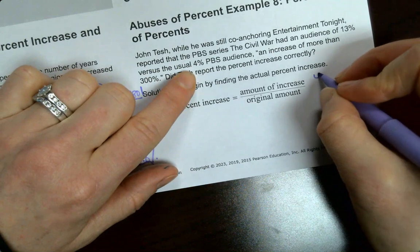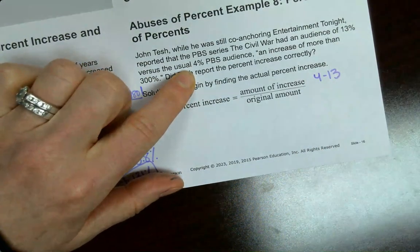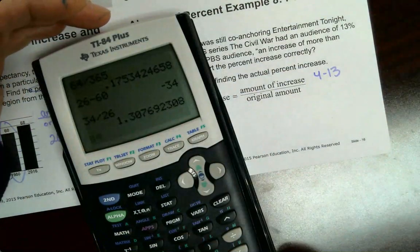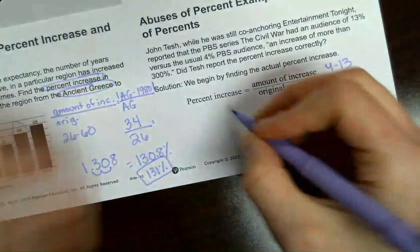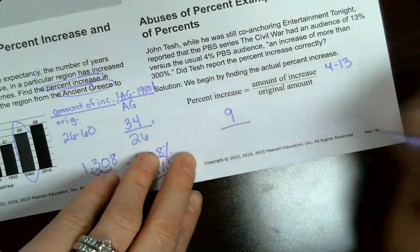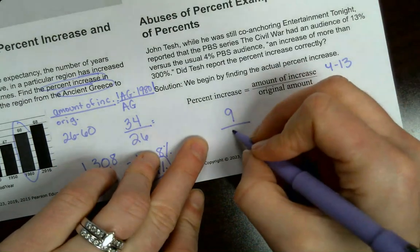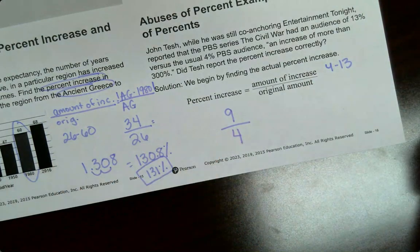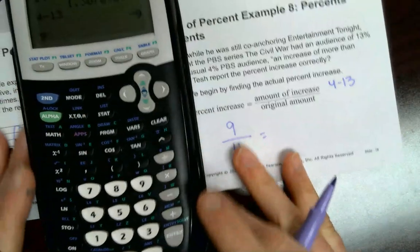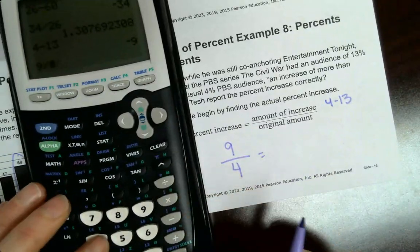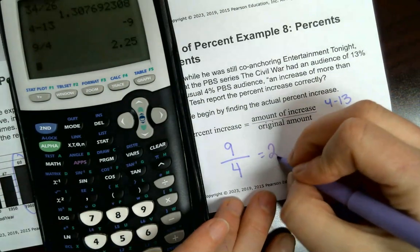So they went from 4 to 13. So it's actually 9. So it went up by 9. 9 percentage points over the original 4. So we've got to divide it by 9. Divide by 4. 2.25.